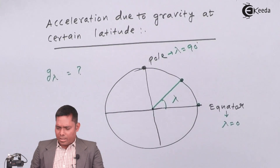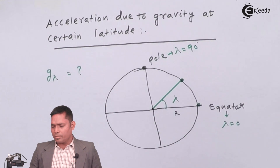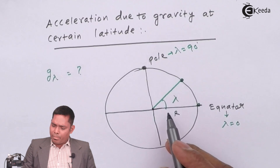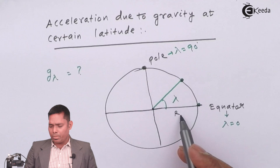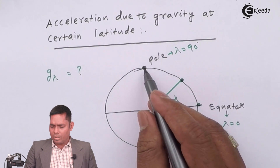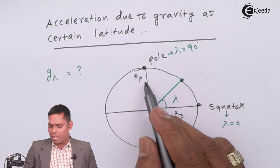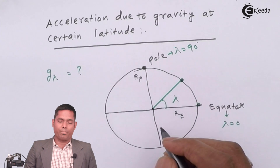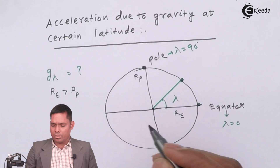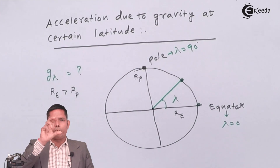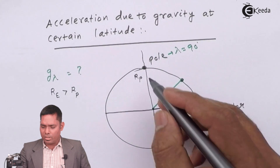The earth has radius R. This is the radius of the earth — R at equator and also R at pole. But note that this R is the equatorial radius and this R is the polar radius. The equatorial radius and polar radius are not the same — the equatorial radius is always greater than the polar radius. The earth is bulging because of its spin motion.